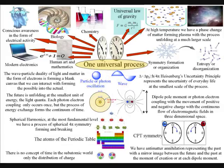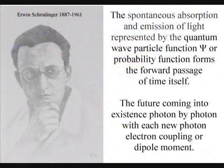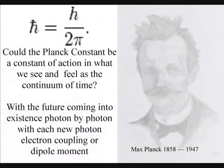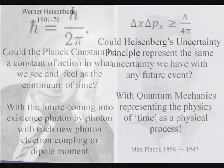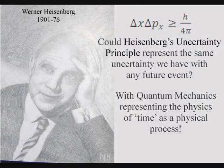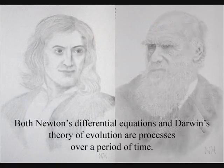In such a theory, the mathematics of quantum mechanics represents the physics of time as a geometrical process of symmetry forming and breaking, with classical physics representing processes over a period of time, as in Newton's differential equations.